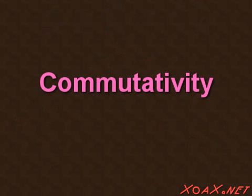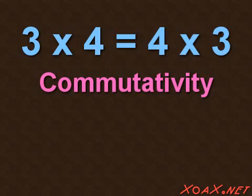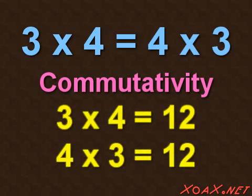The commutativity of multiplication tells us that 3 times 4 is equal to 4 times 3, and we have seen that the value is 12 either way.